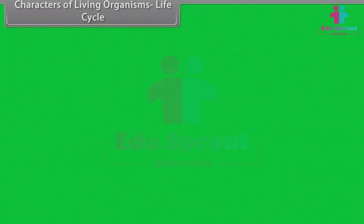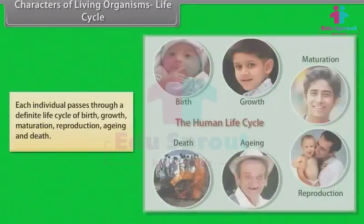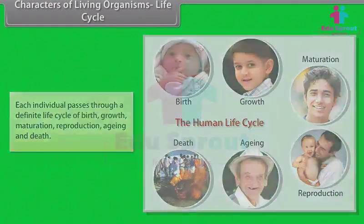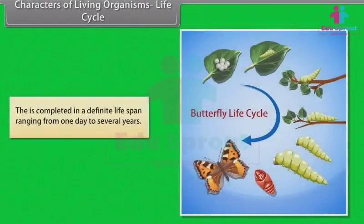Life cycle: Each individual passes through a definite life cycle of birth, growth, maturation, reproduction, aging and death. This is completed in a definite life span ranging from one day to several years.